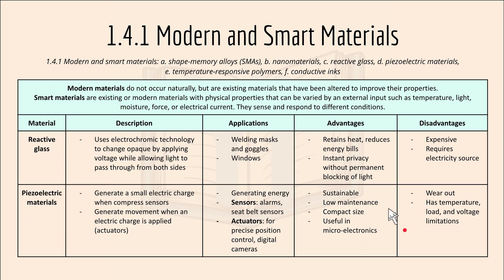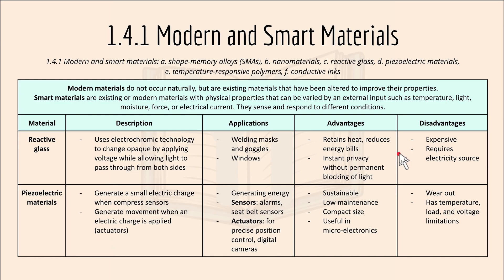Reactive glass uses electrochromic technology to change the opacity — from clear to opaque — by applying voltage, while allowing light to pass through from both sides. Applications include windows or welding masks and goggles. An advantage is that it retains heat and reduces energy bills and provides instant privacy without permanently blocking light. A disadvantage is that it is expensive and requires an electricity source.